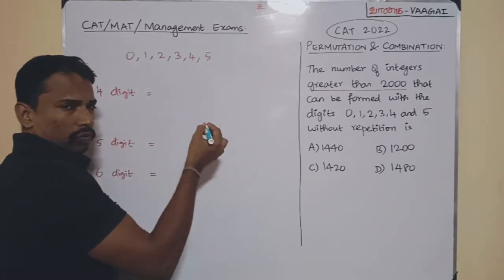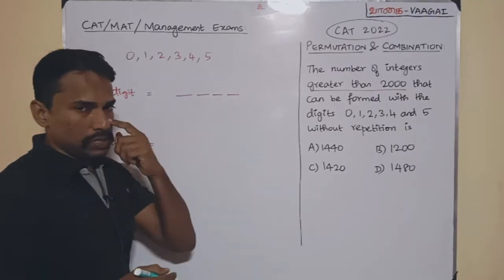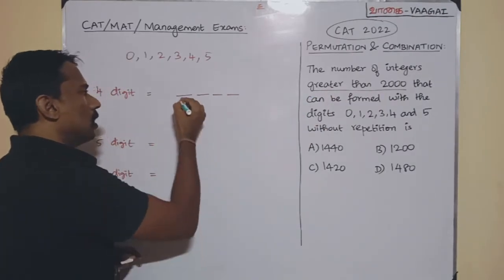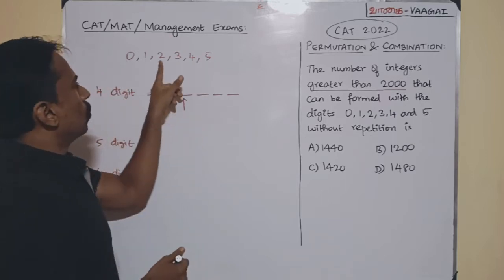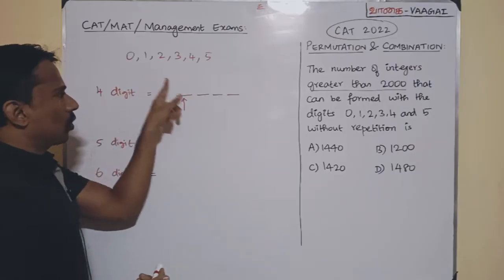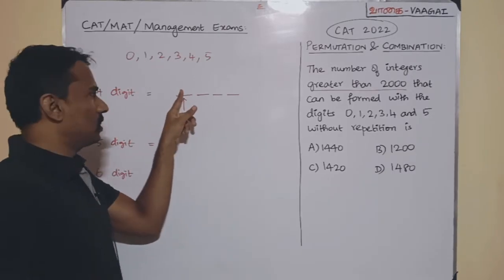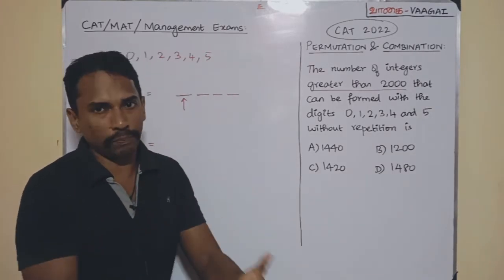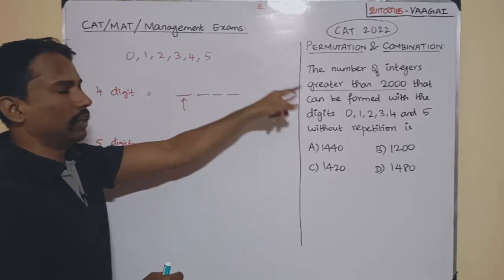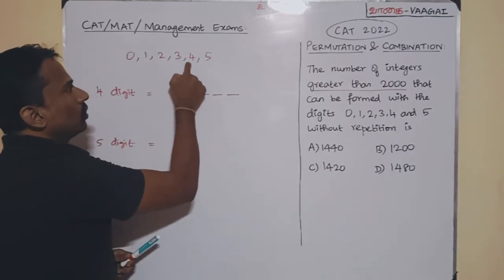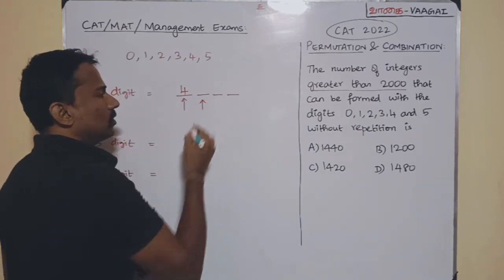Starting with four-digit numbers: put four slots — positions 1, 2, 3, and 4. The first digit must be 2, 3, 4, or 5, because zero would not give a four-digit number, and starting with 1 would give a number less than 2000. So the first slot can be filled in 4 ways.